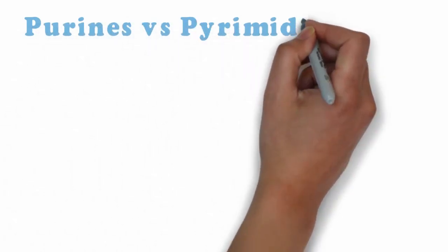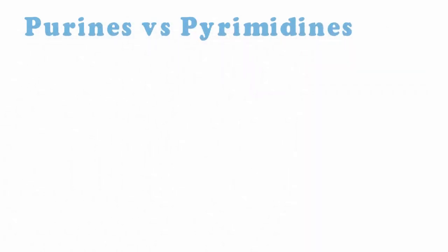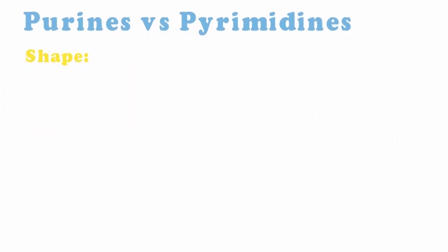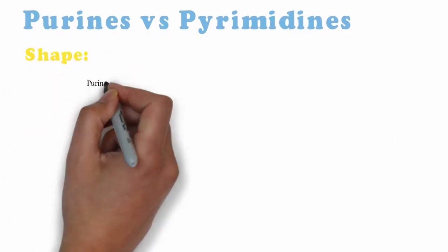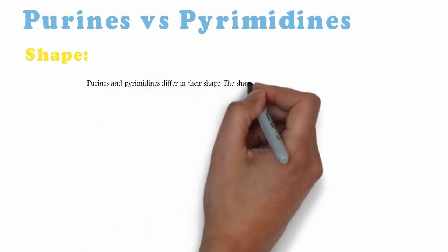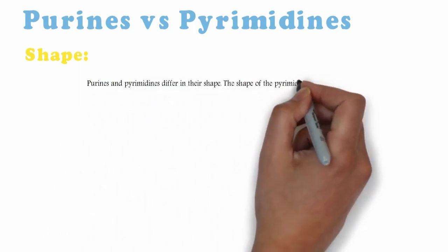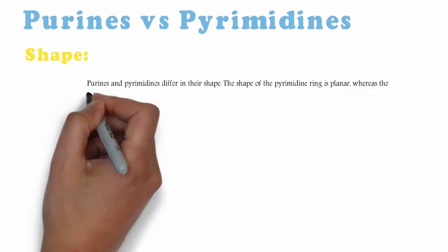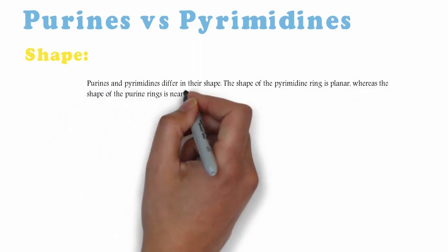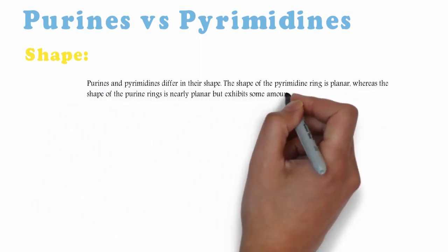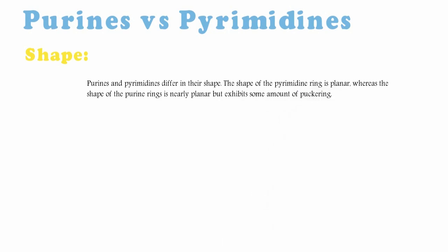Purine vs Pyrimidines: shape. Purines and Pyrimidines differ in their shape. The shape of the Pyrimidine ring is planar, whereas the shape of the Purine rings is nearly planar but exhibits some amount of puckering.